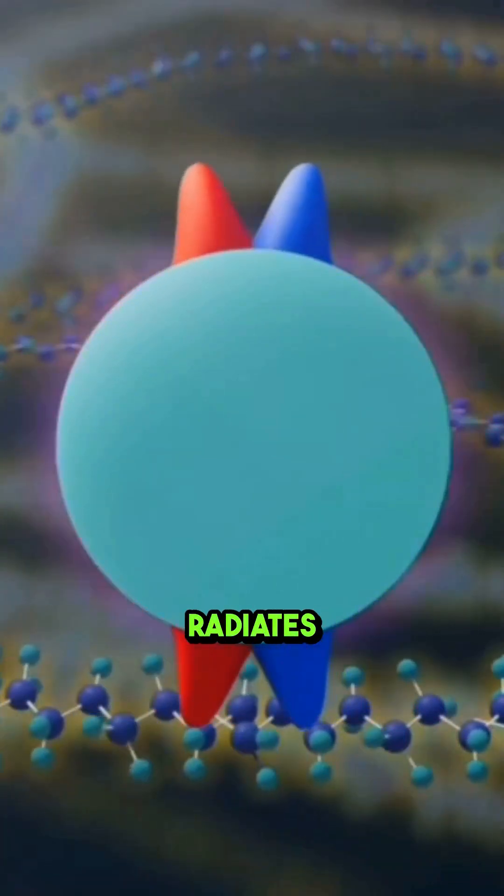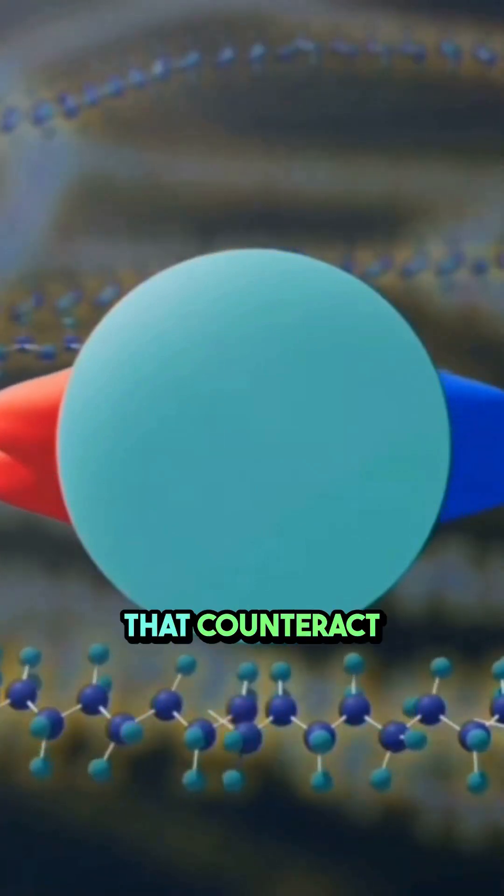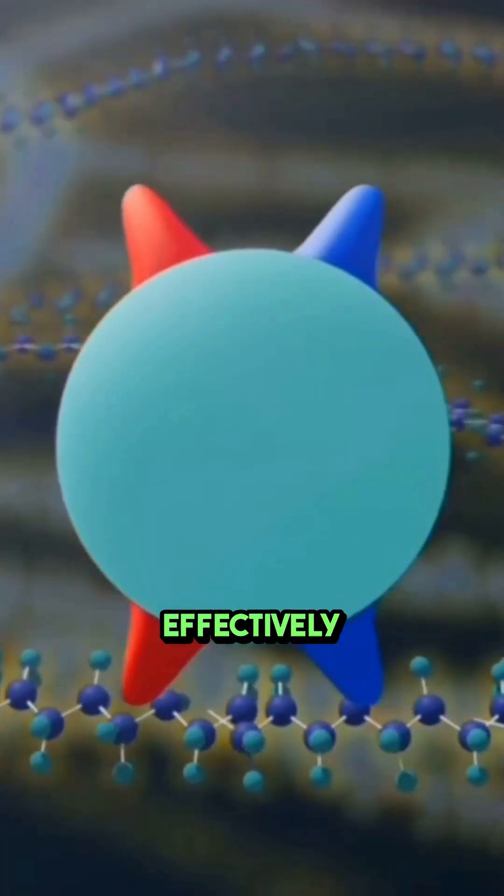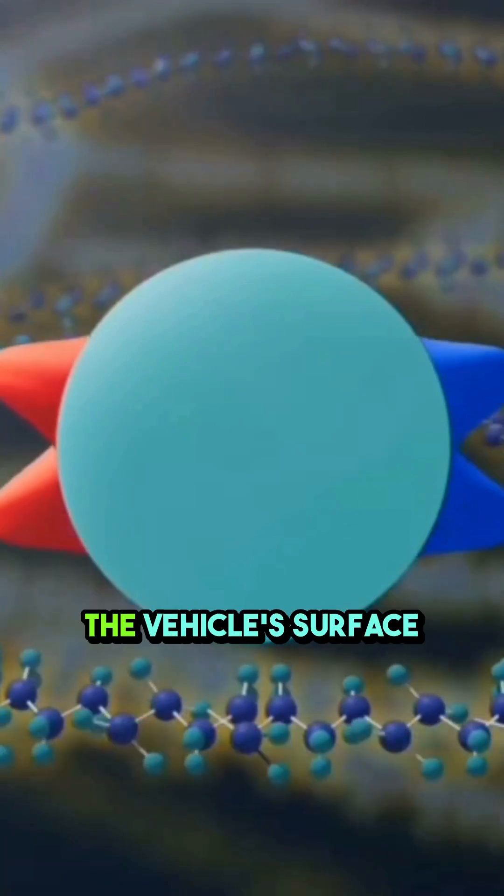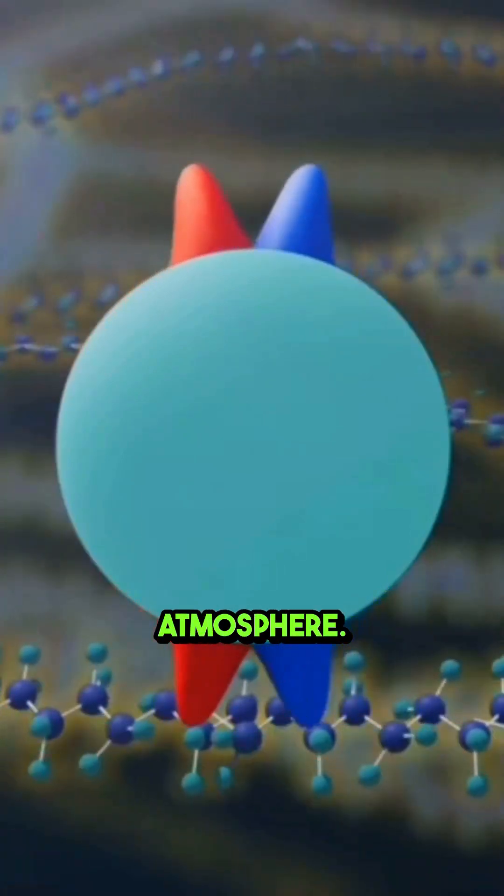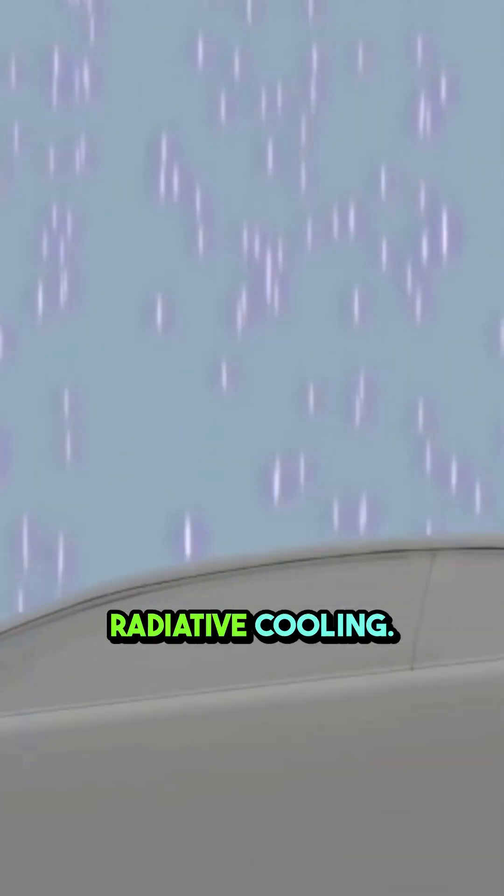This movement radiates electromagnetic waves that counteract the sun's rays, effectively redirecting the heat away from the vehicle's surface and back into the atmosphere. That is radiative cooling.